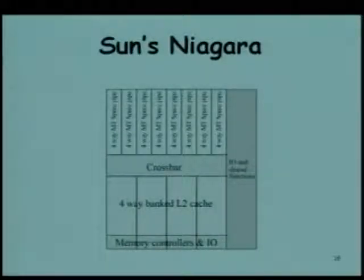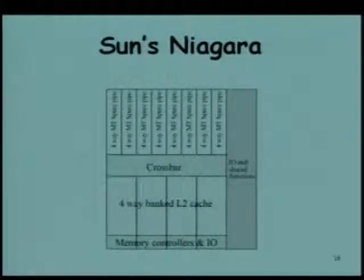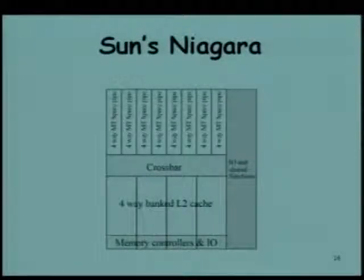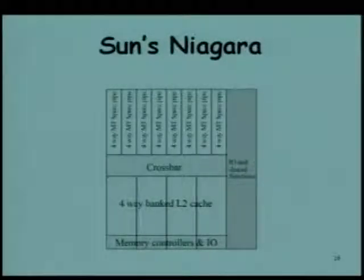These are the different L2 caches, interconnected using a crossbar switch. Cache coherency protocols become difficult when you do not have a bus architecture. Those interested can investigate how cache coherency can be supported with crossbar switches. Buses are becoming more and more bottlenecks, and possibly crossbar is the way to go in the future. AMD is already using a crossbar.